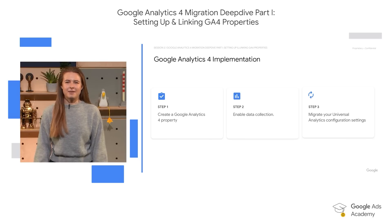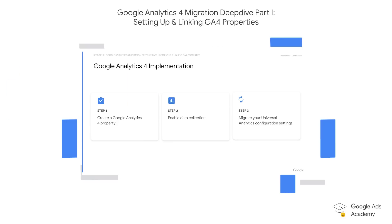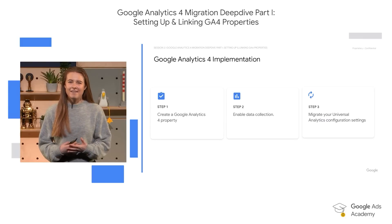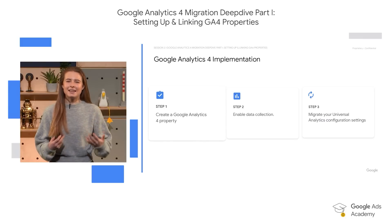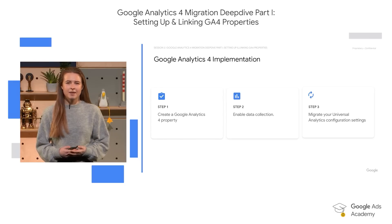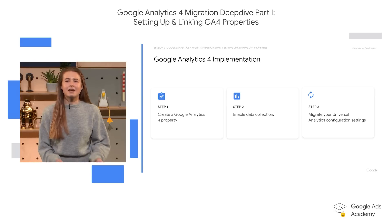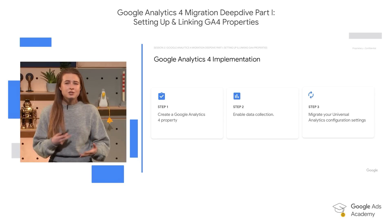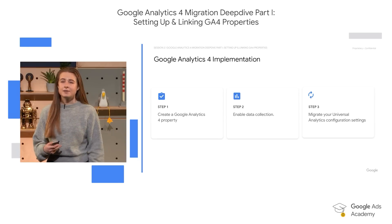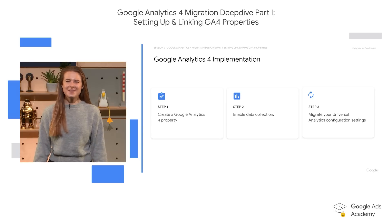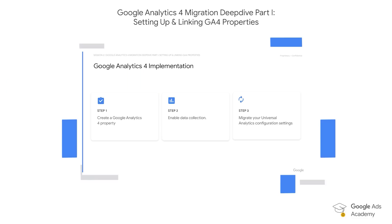We can boil the migration down into three key steps. First is setting up and linking Google Analytics 4 properties — you can use the GA4 Setup Assistant to create a new GA4 property that collects data in parallel with your existing Universal Analytics property. Here, we need to be sure to re-tag if we're not using the latest site-wide tagging (the Google tag) and enable data collection during the setup phase. We also need to link the new GA4 property to Google Ads.